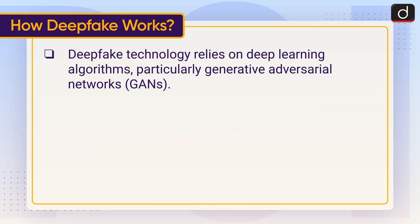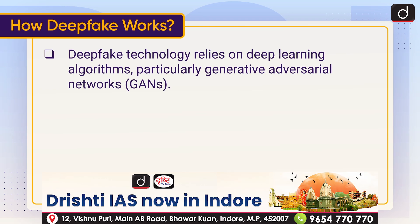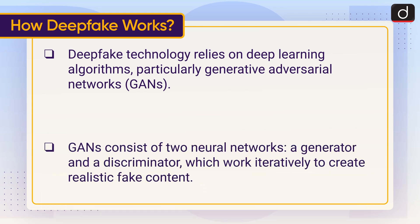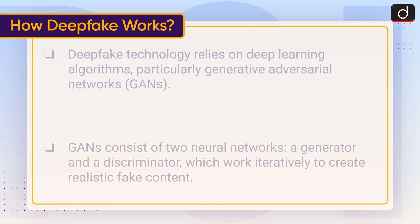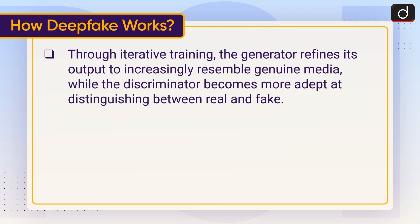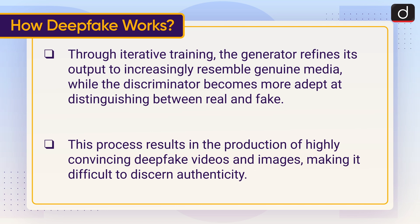Deepfake technology relies on deep learning algorithms, particularly Generative Adversarial Networks (GANs), which consist of two neural networks: a generator and a discriminator. These work iteratively to create realistic fake content. Through iterative training, the generator refines its output to increasingly resemble genuine media, while the discriminator becomes more adept at distinguishing between real and fake. This process results in the production of highly convincing deepfake videos and images, making it difficult to discern authenticity.